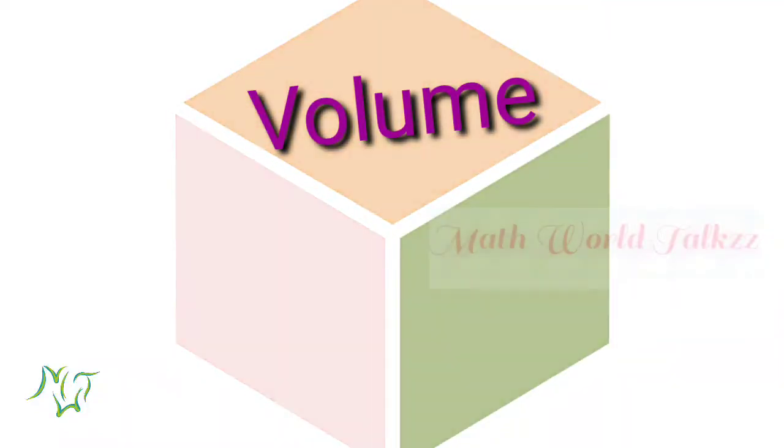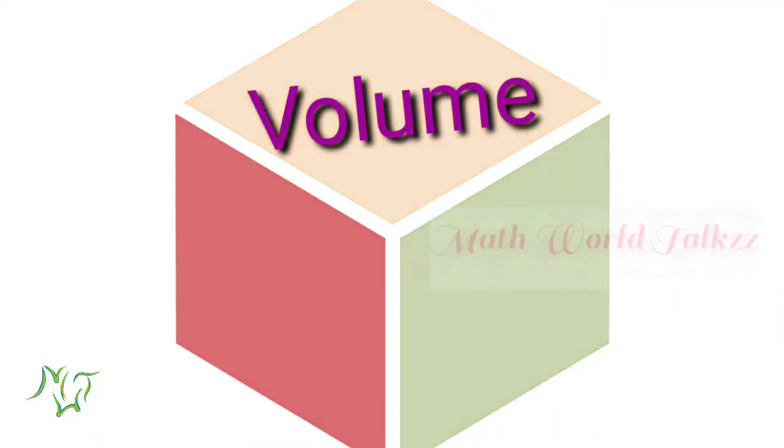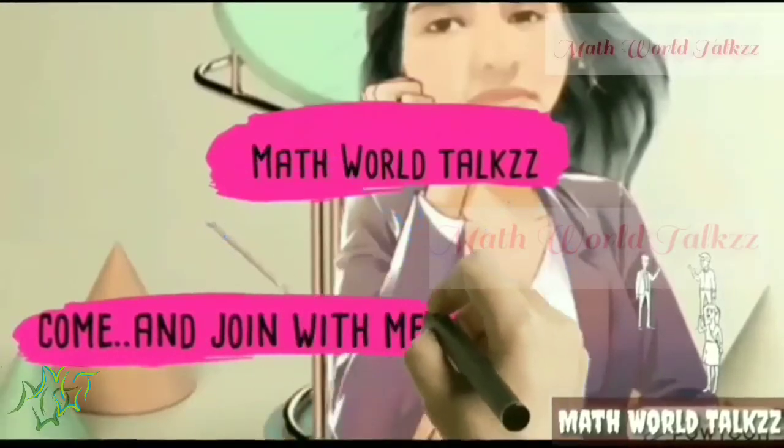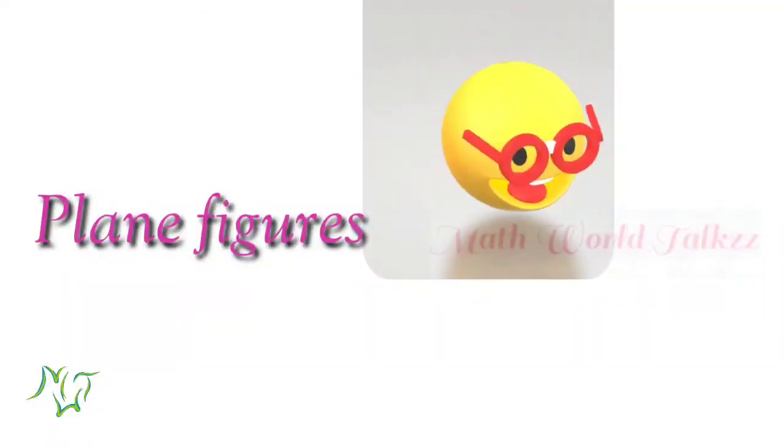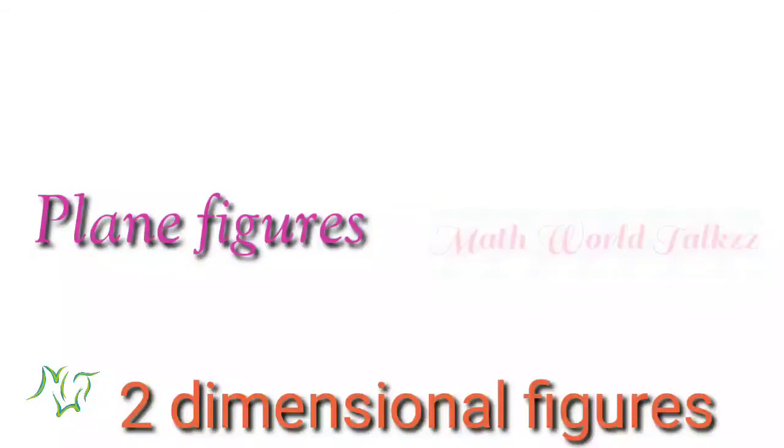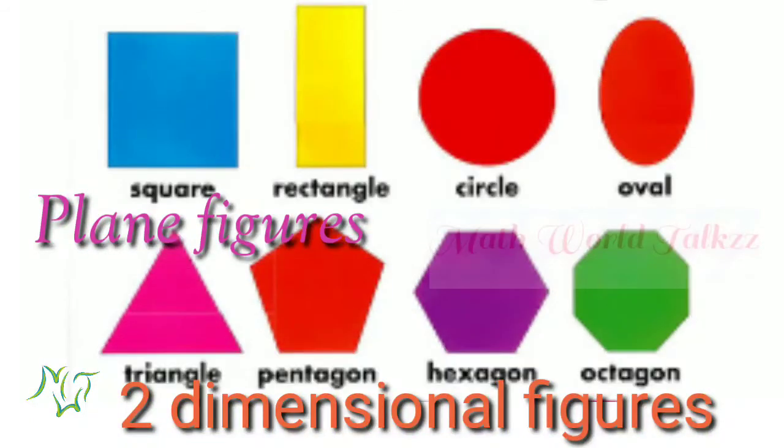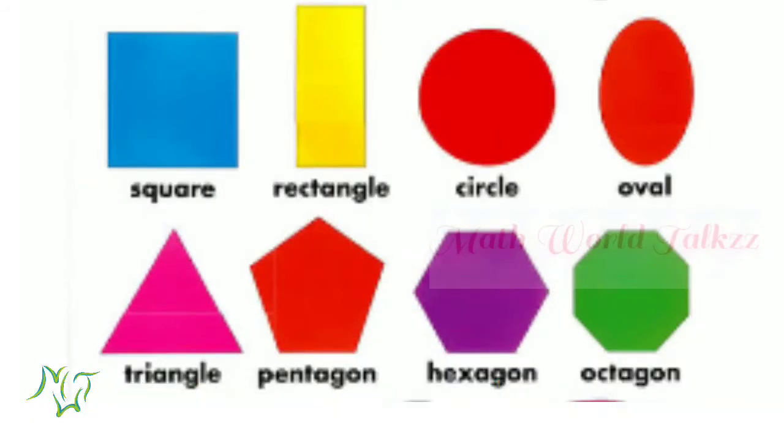In this class we are going to discuss what is a volume. Is there any difference between plane figures and solids? Plane figures are two-dimensional figures: a rectangle, square, circle, triangle. These are all plane figures. These figures have only two dimensions.